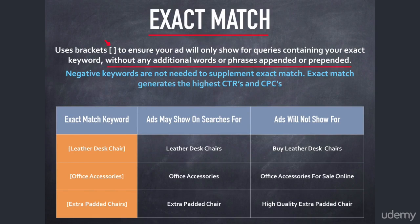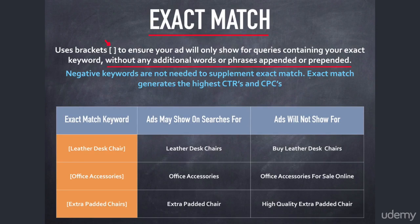That's the distinguishing factor of exact match over phrase match — it really controls exactly what queries your ad is eligible to show for. Negative keywords are not needed to supplement exact match. Exact match generates the highest CTRs and CPCs. CTR stands for click-through rate and CPC stands for cost per click — you'll be getting very familiar with these acronyms.